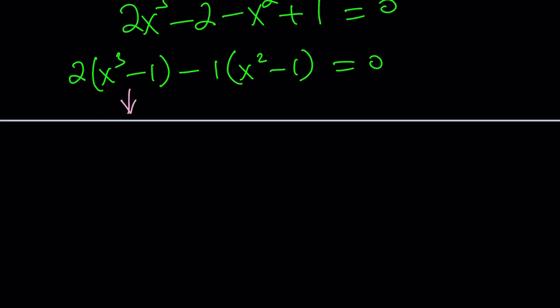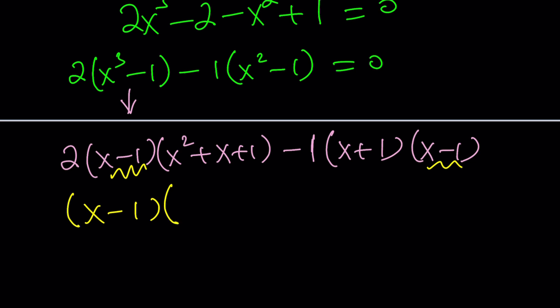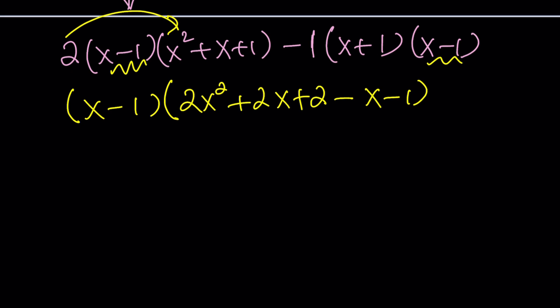This is difference of two cubes. So we can write it as 2 times x minus 1 times x squared plus x plus 1 minus 1 times x plus 1 times x minus 1 from difference of two squares. Now, notice that x minus 1 is a common factor. So we can pull it out. And inside, we're going to have 2 times this, which is 2x squared plus 2x plus 2 minus x minus 1. I'm distributing the negative 1 over the x plus 1.